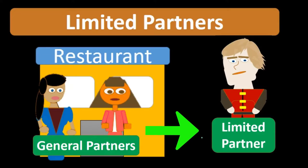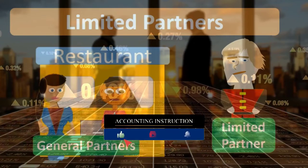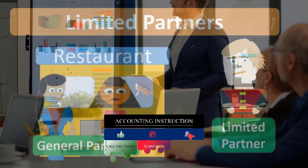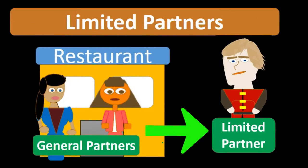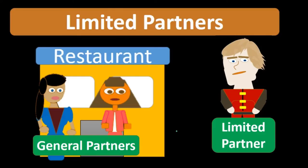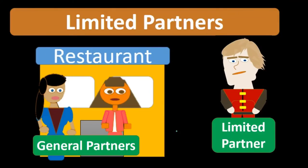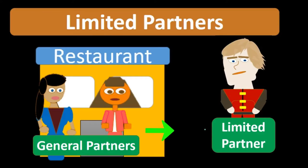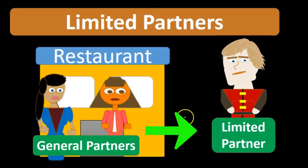A limited partner, on the other hand, is typically more of an investor — investing money into the general partnership, not being in charge of managerial decision-making, and therefore having less personal liability. The assets put into the business are subject to any problems within the business, but personal assets have more liability protection for the limited partner compared to the general partner. This allows investors acting as limited partners to more easily invest their capital.